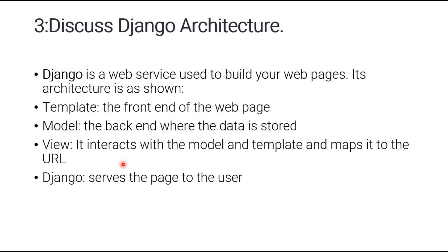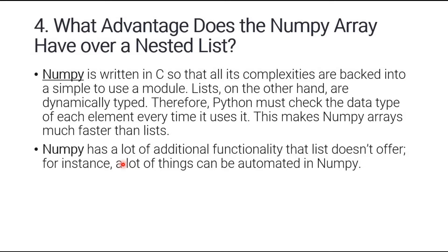Question number four: what advantages does a NumPy array have over a nested list? NumPy is written in C, so all its complexities are backed into a simple-to-use module. Lists are dynamically typed and can contain multiple data types, so Python must check the data type of each element every time it uses it — that's why NumPy arrays are much faster. NumPy also has many additional functionalities that lists don't offer.